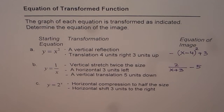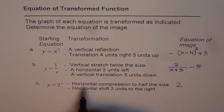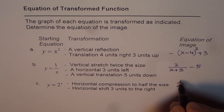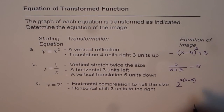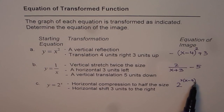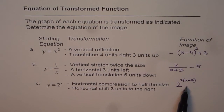For the exponential function, horizontal compression to half the size means inside the exponent we multiply x by 2. The horizontal shift 3 units to the right means minus 3. So the function becomes y equals 2 to the power of (2x minus 3). It is important to put these brackets — it clearly says horizontally compressed by a factor of half and translated 3 units to the right. That is the answer for this question.